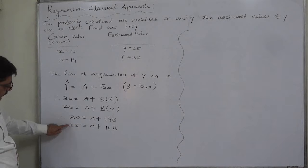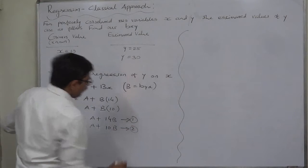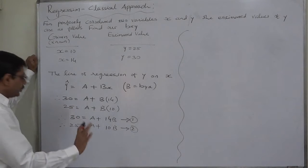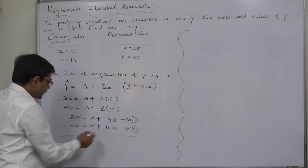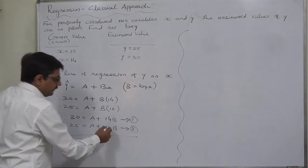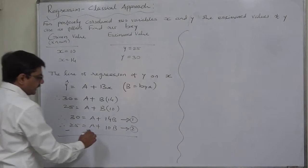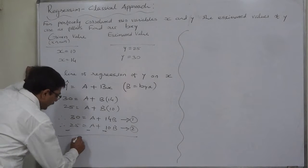If we subtract second equation from the first equation, then we can have something useful. Let's do it. If we subtract second equation from the first, the sign of all these three will change. It will be negative from positive. It will also be negative and it will also be negative. 30 minus 25 is 5.